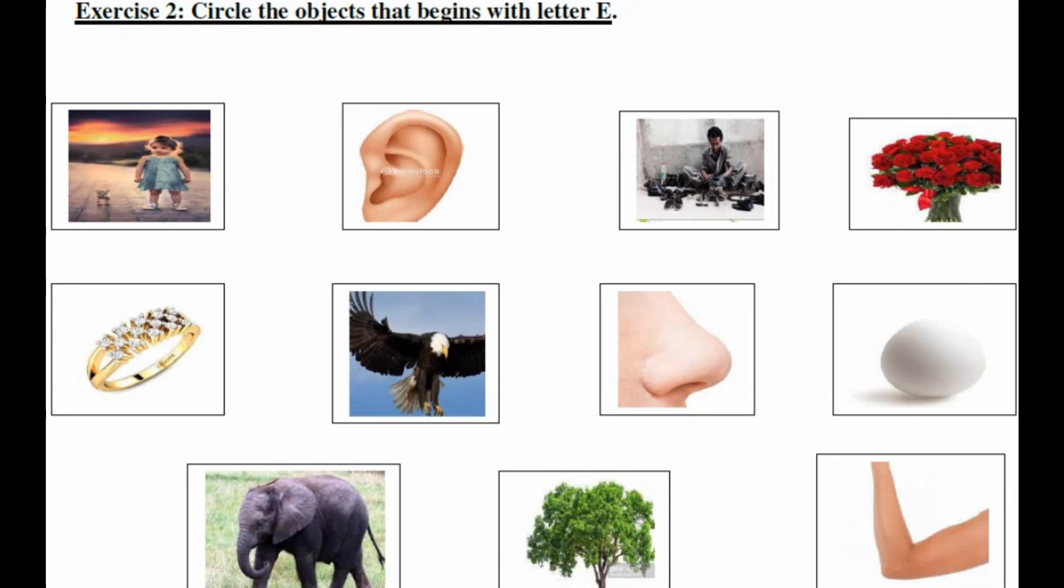Circle the objects that begins with letter E. We need to circle the objects that start with E. Here there are many objects, so whichever starts with E we will click on it. E for ear, and see, E for eagle, E for egg, E for elephant. What else, let's see.